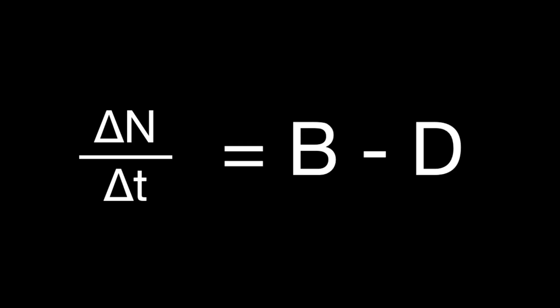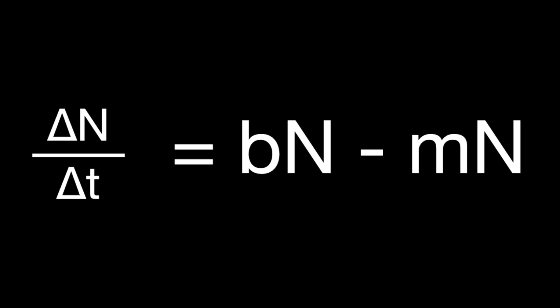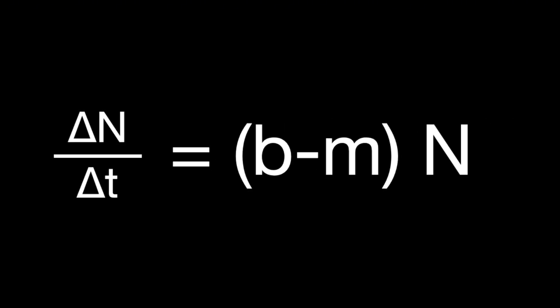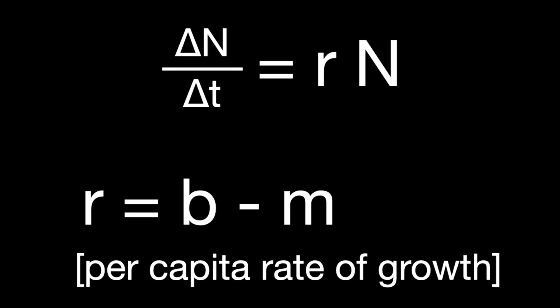Here is where things get more interesting. We can take the original equation ΔN/ΔT = B − D and replace each variable with the newly defined per capita terms. Factoring out N, we can rewrite the equation and define lowercase r to mean the per capita birth rate b minus the per capita mortality rate m — combining them into a single per capita rate of growth. So in its final form, a change in population size is modeled as dN/dT = rN.